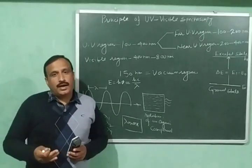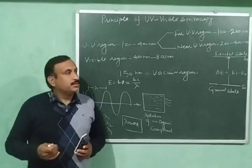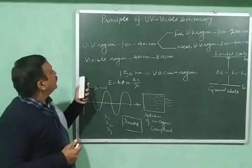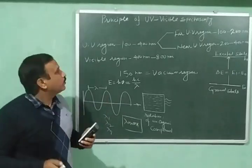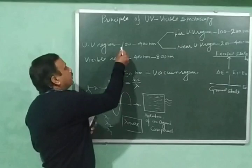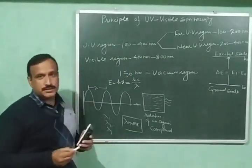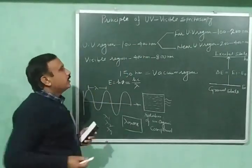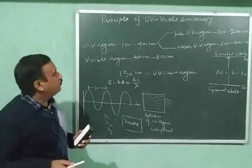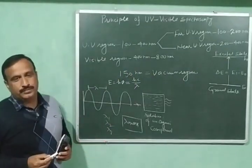In the electromagnetic spectrum, the ultraviolet region extends from 100nm to 400nm, and the visible region extends from 400nm to 800nm.